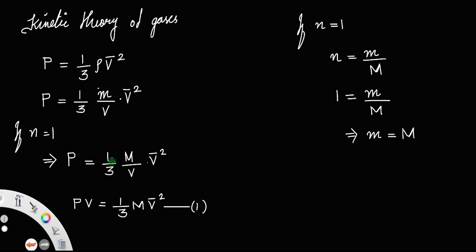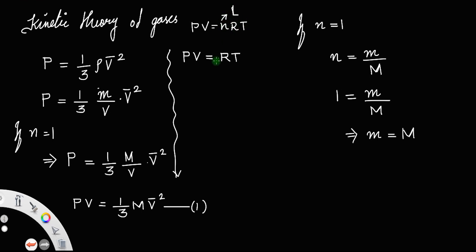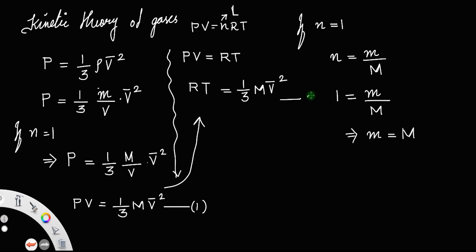From the ideal gas equation, pV = nRT. But since n = 1, pV = RT. Substituting into equation 1, we get RT = (1/3) Mv². Let us call that equation number 2.